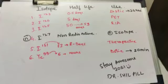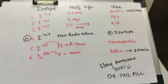Technetium-99 is also used in thyroid scans. To remember its half-life, you take the 9 from 99, flip it around, and it becomes 6 hours. So the half-life of technetium-99 is 6 hours.